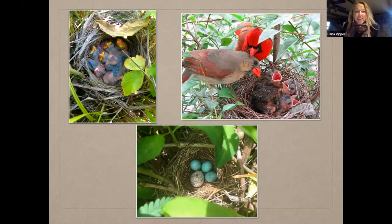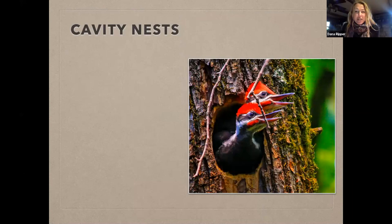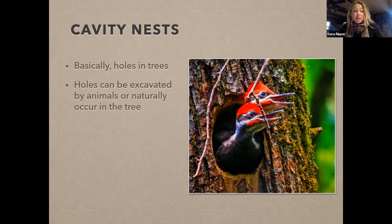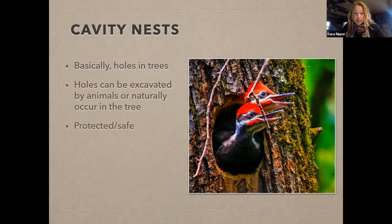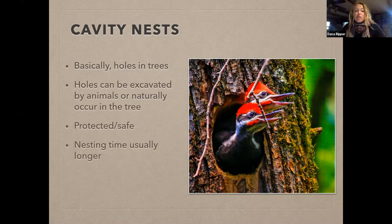My favorite type of nest is the cavity nest — partly because I studied woodpeckers for a long time, and partly because they typically have a really happy ending. Essentially these are holes in trees, either excavated by animals like woodpeckers or naturally occurring when a limb breaks off and the knot gets wallowed out over time. Cavity nests are very protected — they're not exposed to rain, they're less visible and less accessible to predators.